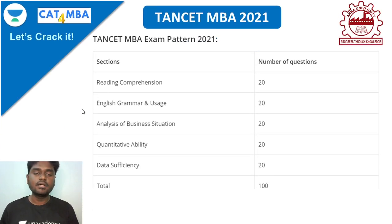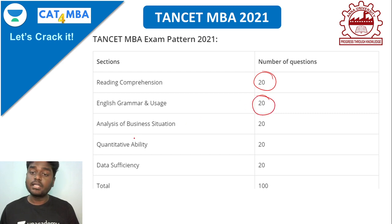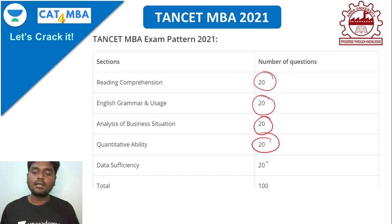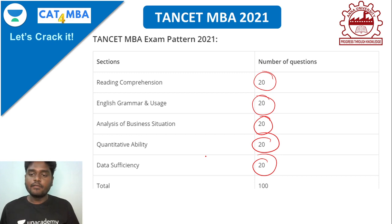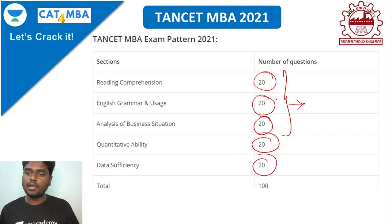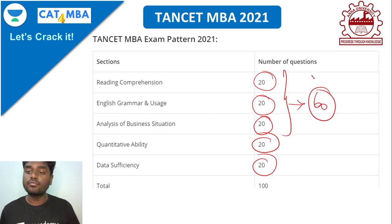The five sections are: first, Reading Comprehension — 20 questions; second, English Grammar — 20 questions; third, Business Analysis — 20 questions; fourth, Quantitative Aptitude — 20 questions; and fifth, Data Sufficiency — 20 questions. The first three sections together account for 60 questions, which come from the verbal part, and the last 40 questions come from the math part.